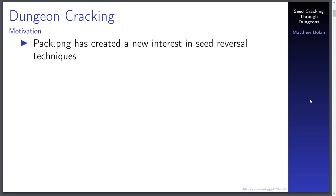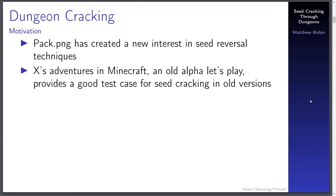Recently there's been this thing, PacPNG, which has created just an incredible amount of interest in seed reverse engineering. In particular the PacPNG problem takes place in Alpha 1.2, but that's a very hard problem because it's a nondescript hill that you'd want to be reversing. So we started to ask: is there something easier from Alpha that we can try and reverse first? AntVenom actually suggested cracking the seed of X's Adventures in Minecraft, an old Alpha let's play from 2010 that really helped Minecraft get off the ground.